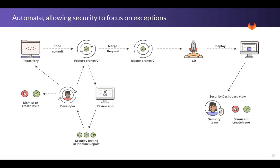If you're talking to a security person and you say that developers can dismiss a vulnerability, that usually raises hackles — they worry developers will just dismiss everything. But the key is that developers can write in a reason why. There are legitimate reasons for dismissing: maybe it's a test database, or there's a compensating control elsewhere. So there are legitimate reasons why they might dismiss a vulnerability.